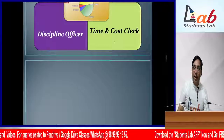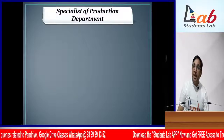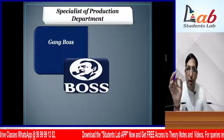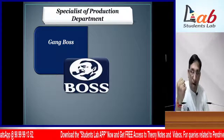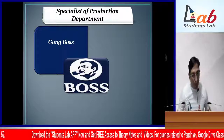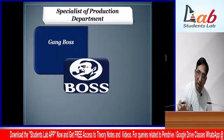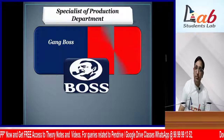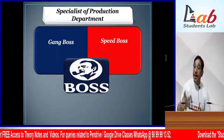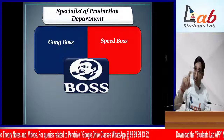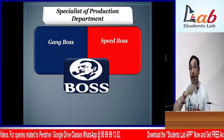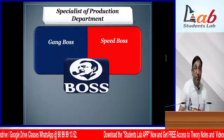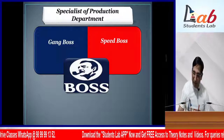After the Planning Department, there are 4 foremen in the Execution Department - the Production Department. First is the Gang Boss - who ensures all workers are fit and have material available for work, since at factory level physical fitness is important. Second is the Speed Boss - who checks whether work is being done at the speed planned by the Time and Cost Clerk, and if there is deviation - if work is not happening on time - finds out the reason.